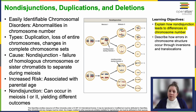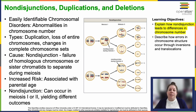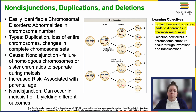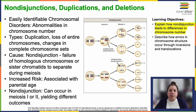Non-disjunction can happen in meiosis 1 or meiosis 2, leading to distinctly different outcomes. Failure of homologous chromosomes to separate in meiosis 1 results in two gametes lacking the chromosome and two with two copies. If sister chromatids fail to separate in meiosis 2, one gamete lacks the chromosome, two have one copy, and one possesses two copies — so two gametes are fine, one is missing the chromosome, and one has an extra copy.